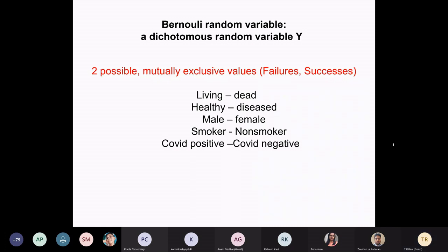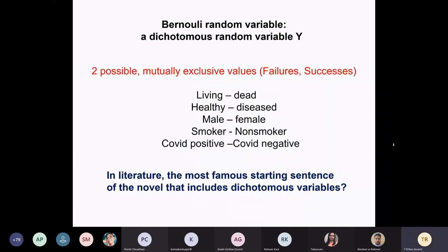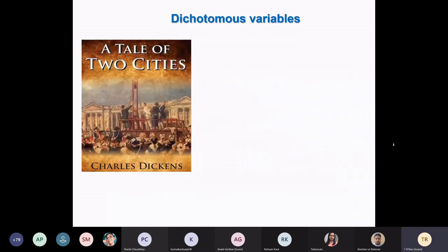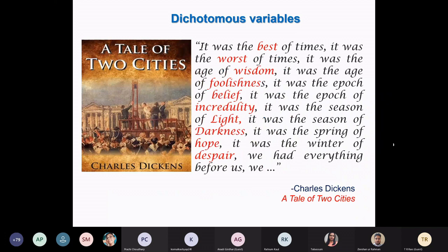Curiosity in literature — there is a famous starting sentence of a novel that beautifully includes dichotomous variables. That is 'A Tale of Two Cities' by Charles Dickens. The novel starts with that celebrated first sentence. See the dichotomous variables: best and worst, wisdom and foolishness, belief and incredulity, light and darkness, hope and despair. A beautiful sentence. It summarized things going on in the Victorian era when this story was unfolding in two cities, London and Paris. Both extremes existed side by side.